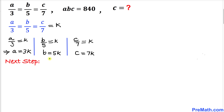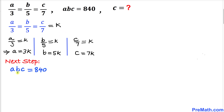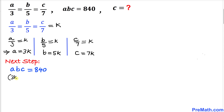Here's our next step. Let's focus on the equation a times b times c equals 840. I have copied it down and I am going to replace a by 3k, b by 5k, and c by 7k. So I replace a by 3 times k, b by 5 times k, and c by 7 times k, all equal to 840.